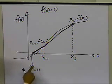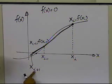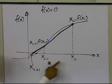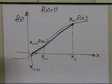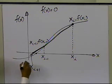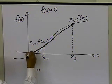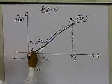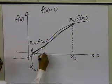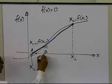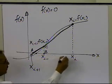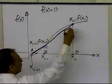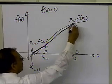Then you do the same thing: you draw a secant line between this point and this point, and again see where the secant crosses the x-axis, and that becomes your next root estimate. So let's label these points: call this point A, this point B, this point C, this point D, and this point E.